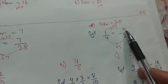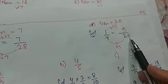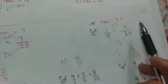And here 1 by 4 is blank upon 20. That means 4 into 5 is 20. So 1 into 5 will be 5.